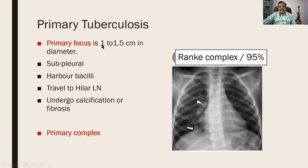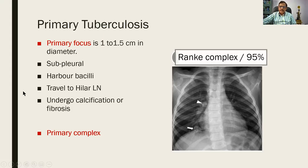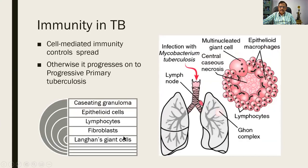The Ghon's focus is about one centimeter in diameter, subpleural. Sometimes it undergoes calcification or fibrosis. In this X-ray you can see the focus and the lymph nodes undergoing calcification. The radiological evidence of this is called the Ranke complex — the Ranke complex is the radiological counterpart of the Ghon's complex, representing the primary complex of the lung.